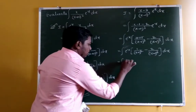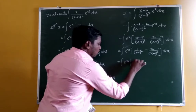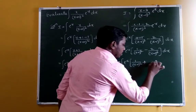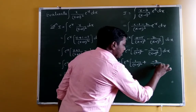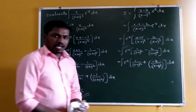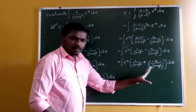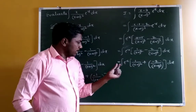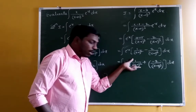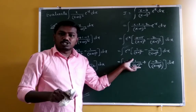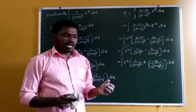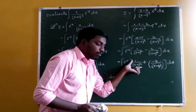Rewrite as: integration of eˣ into [1/(x−1)² plus (−2/(x−1)³)] dx. The derivative of 1/(x−1)² is −2/(x−1)³. So this matches the formula ∫eˣ[f(x) + f'(x)]dx, where f(x) = 1/(x−1)².